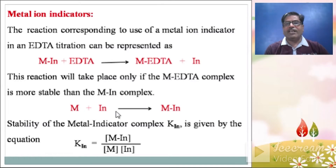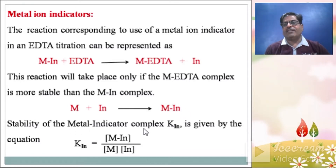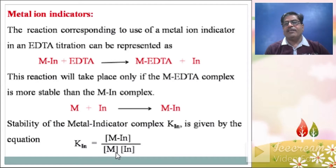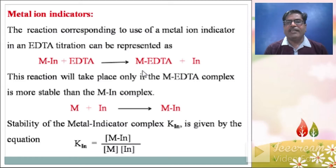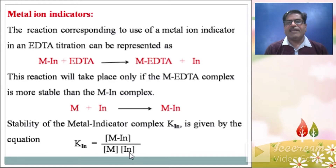Thus, metal plus indicator forms metal indicator complex. The stability of the metal indicator complex, KIN, is given by the equation: KIN equals [MIN] divided by [M] times [IN]. Here KIN means stability constant. Applying the law of mass action to this reaction, the product concentration is divided by the reactant concentration.